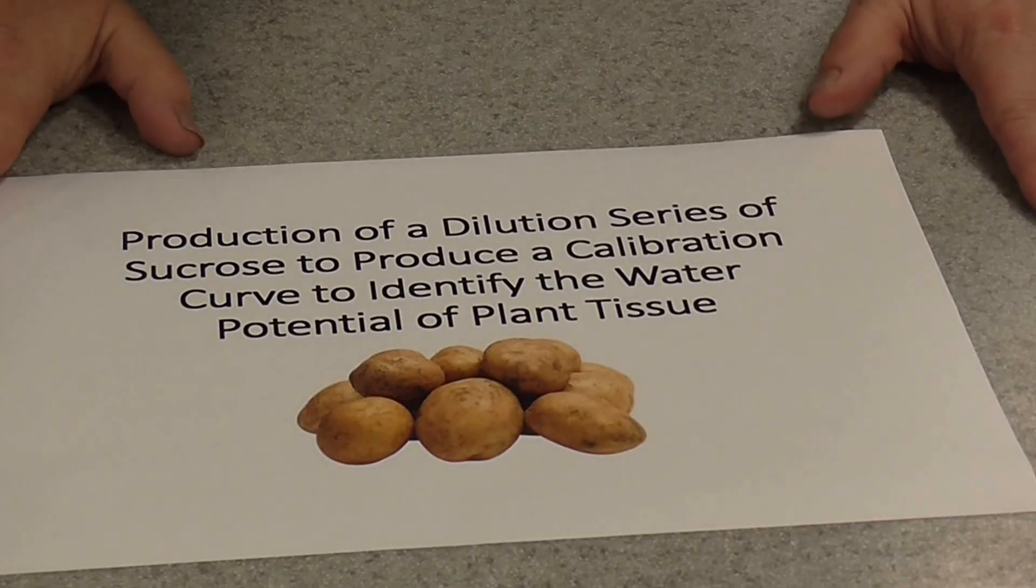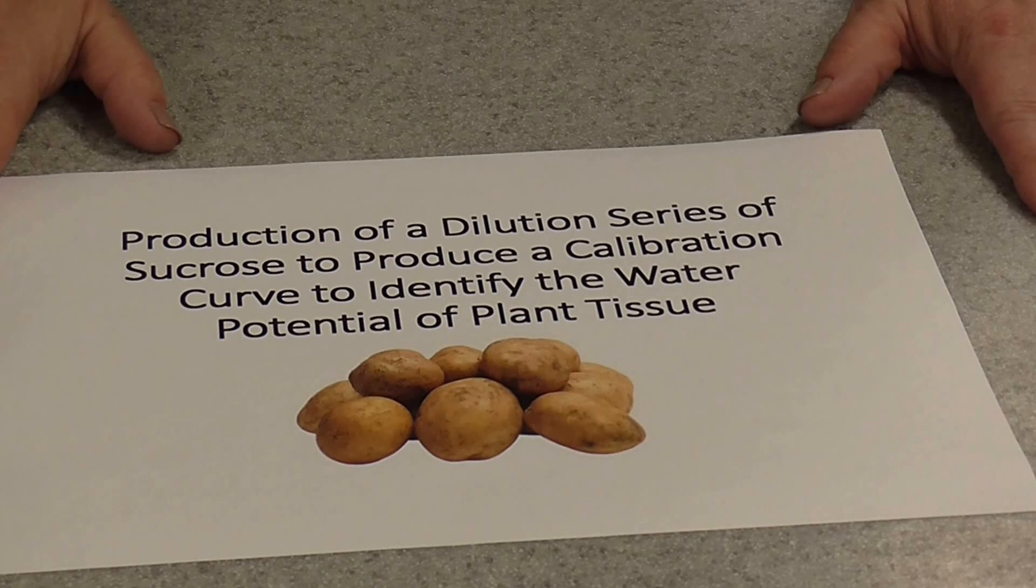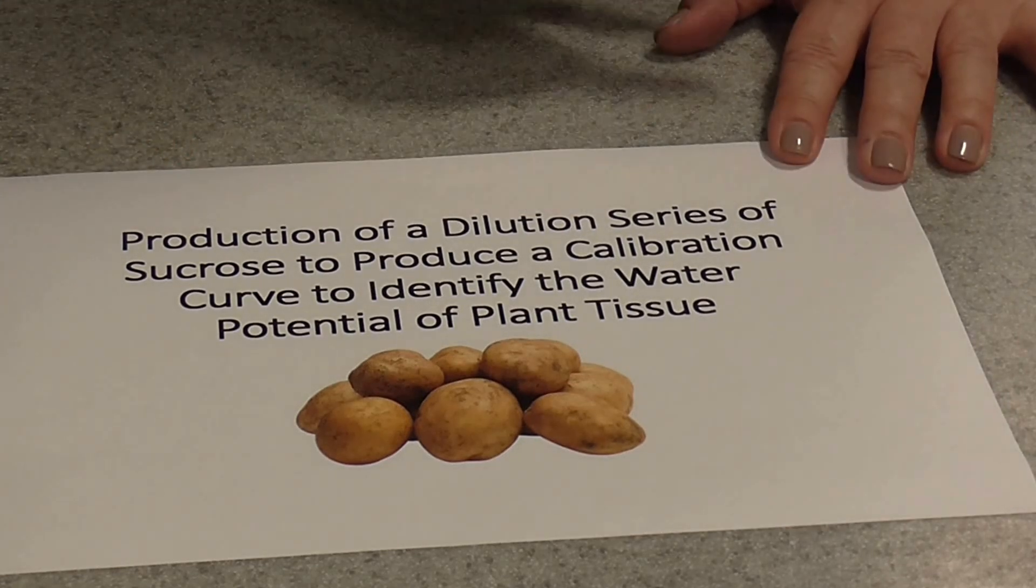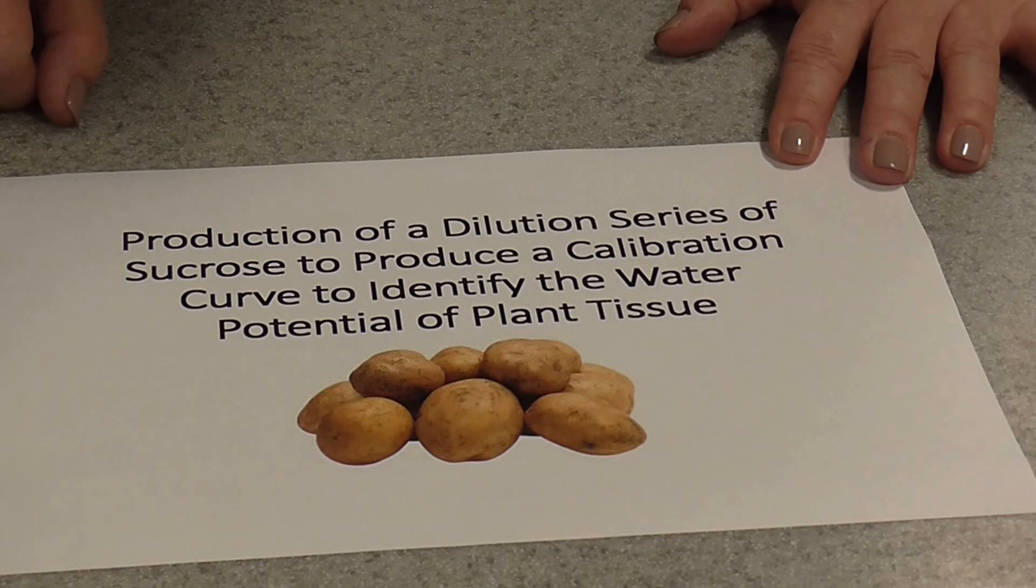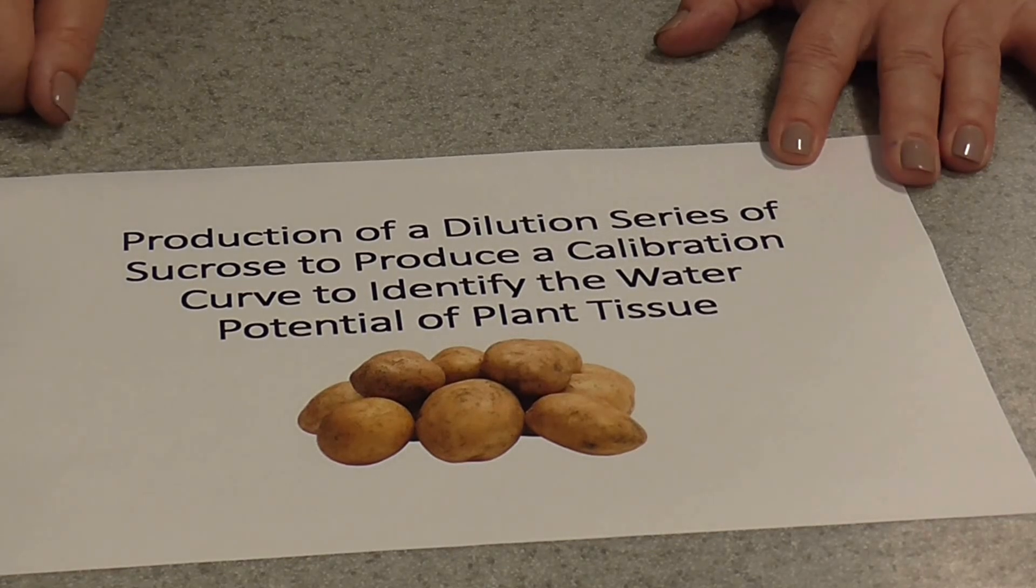Today I'm going to show you how to do one of the A-level biology required practices. You need this for the AS and the A-level biology and it's the production of a dilution series of sucrose to produce a calibration curve to identify the water potential of plant tissue.